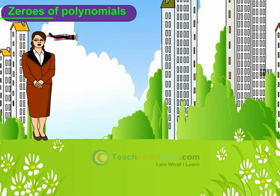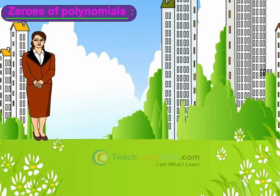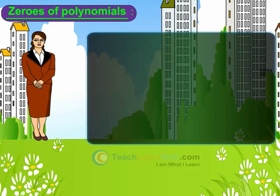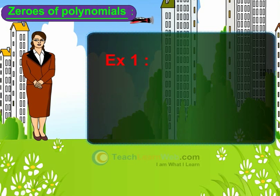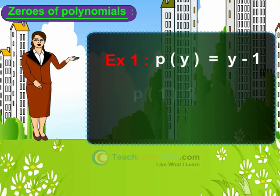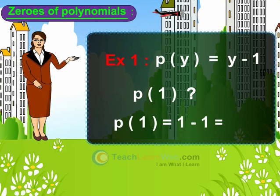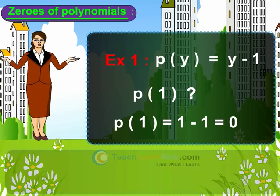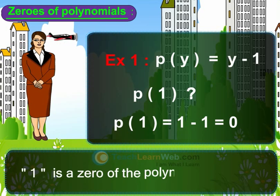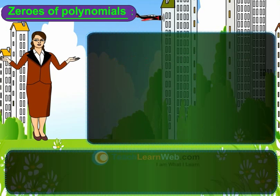Zeros of a polynomial. In this session we will learn how to find the zeros of a polynomial. Let us start with examples. Example 1: consider the polynomial p of y is equal to y minus 1. What is p of 1? p of 1 is equal to 0. As p of 1 is equal to 0, we can say that 1 is a zero of the polynomial p of y.